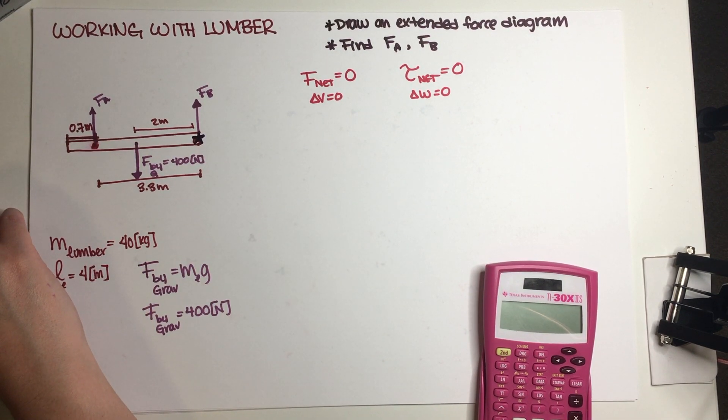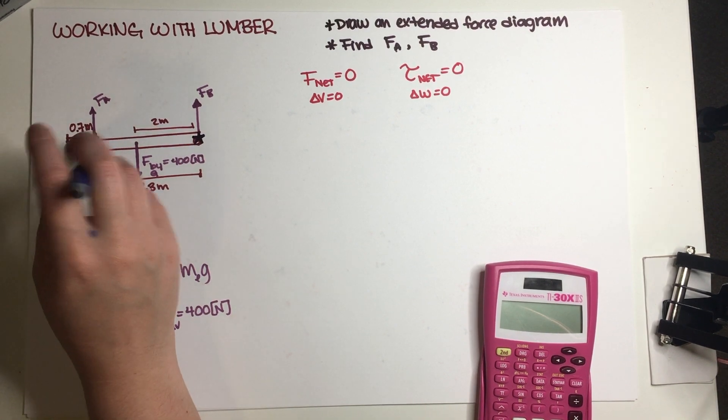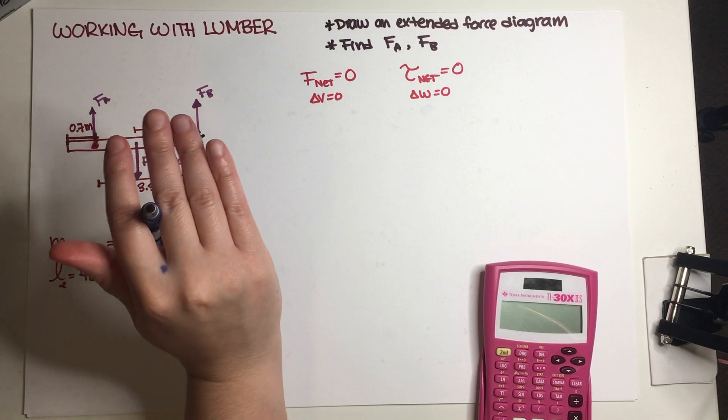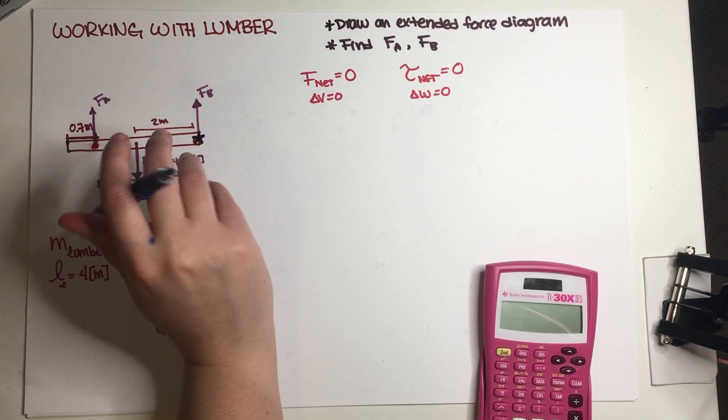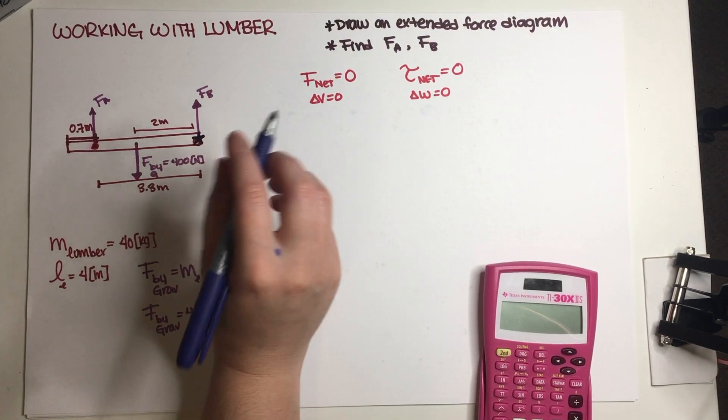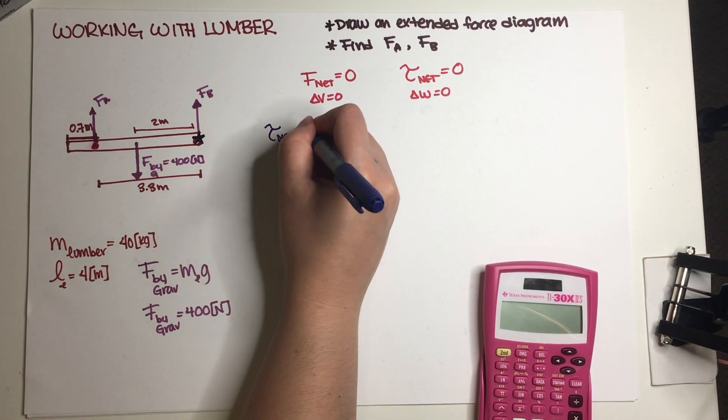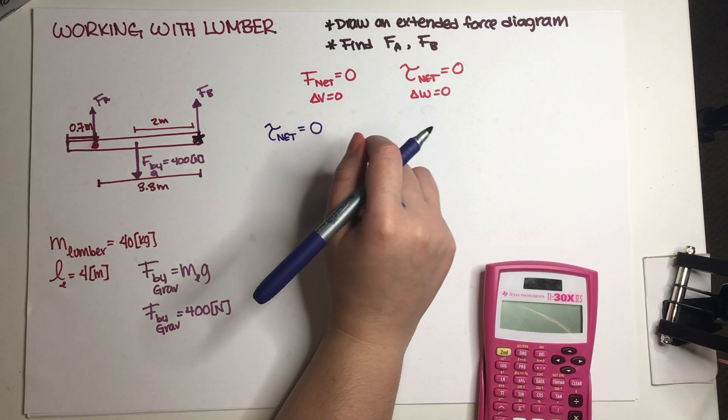But again, I'm just doing this because I just finished the video in which I picked the other one. It really doesn't matter. So long as you know that you have to pick a pivot point, you're going to be good. Now let's state that our net torque around this pivot point is equal to zero.